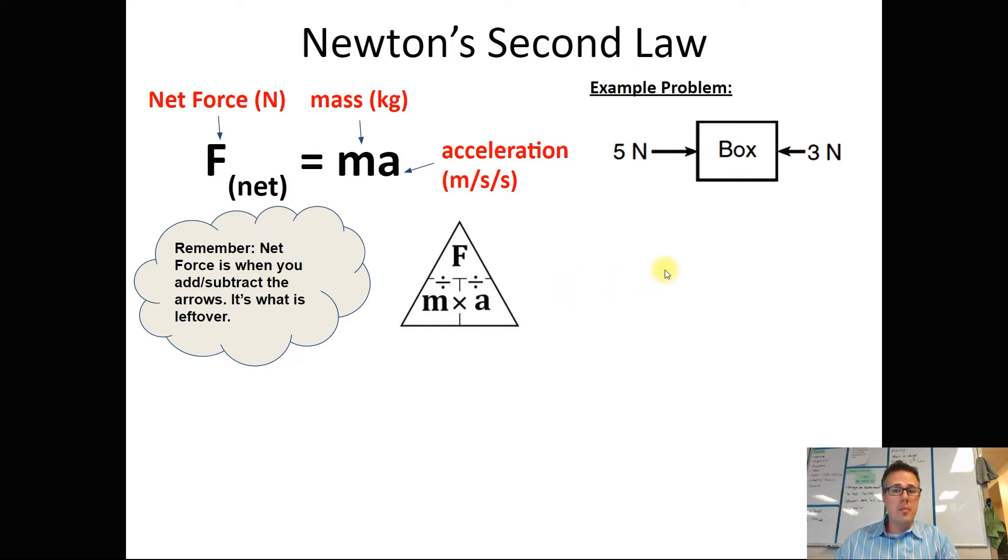So let's do an example, a couple of example problems together. Let's go back to that box that had five newtons on this side and three on the other side, and let's figure out how much it's going to accelerate. Let's say that this box has a mass of five kilograms. With that information, we can figure out how much it's going to speed up or accelerate.